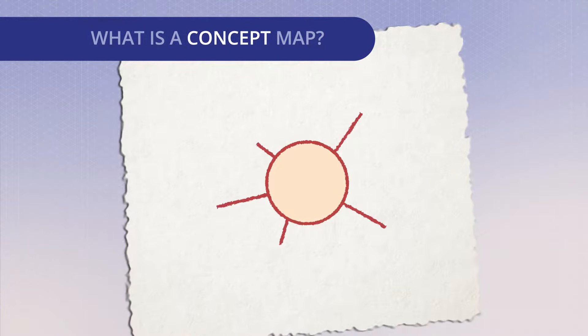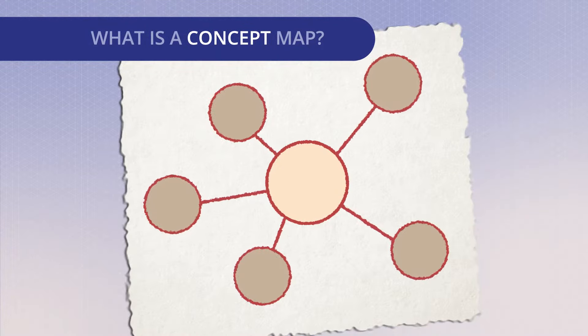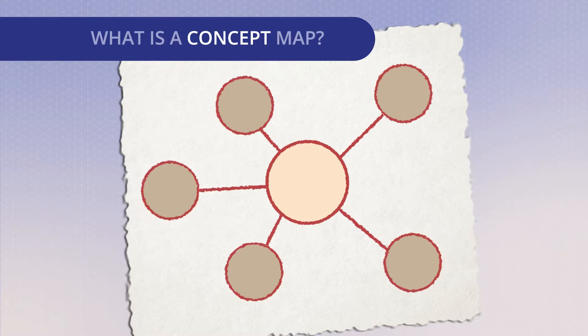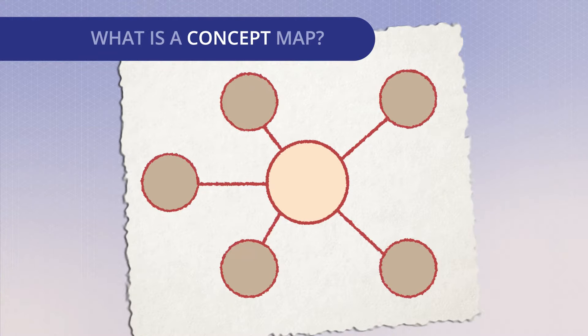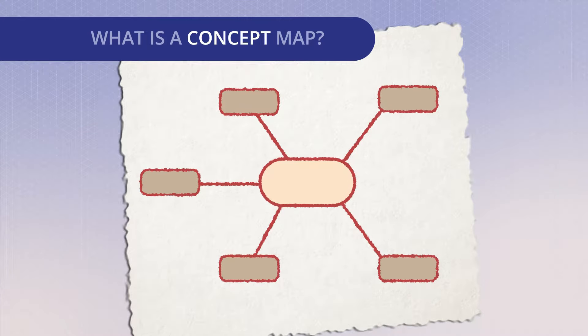A concept map is a diagram that illustrates the relationships between concepts and ideas. Often represented in circles or boxes, most concept maps represent a hierarchical structure with the overall broad ideas first and more specific ideas as subtopics.